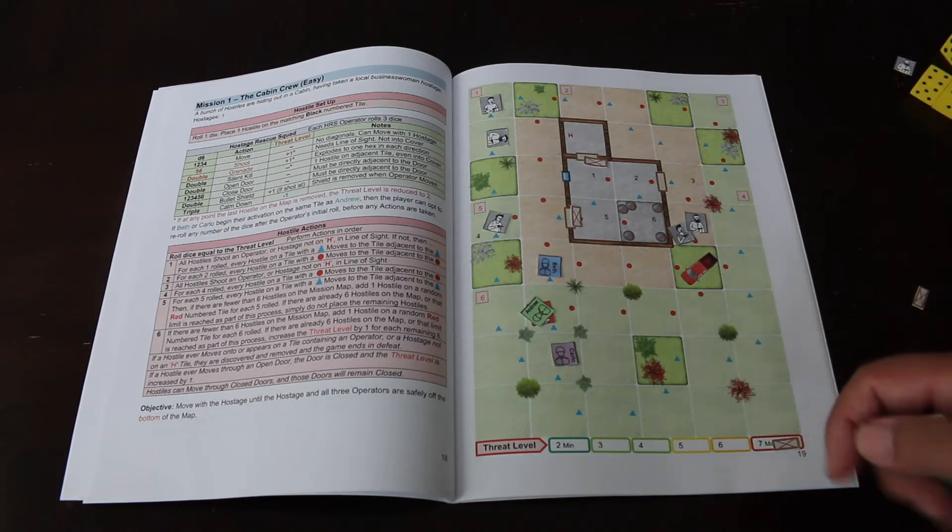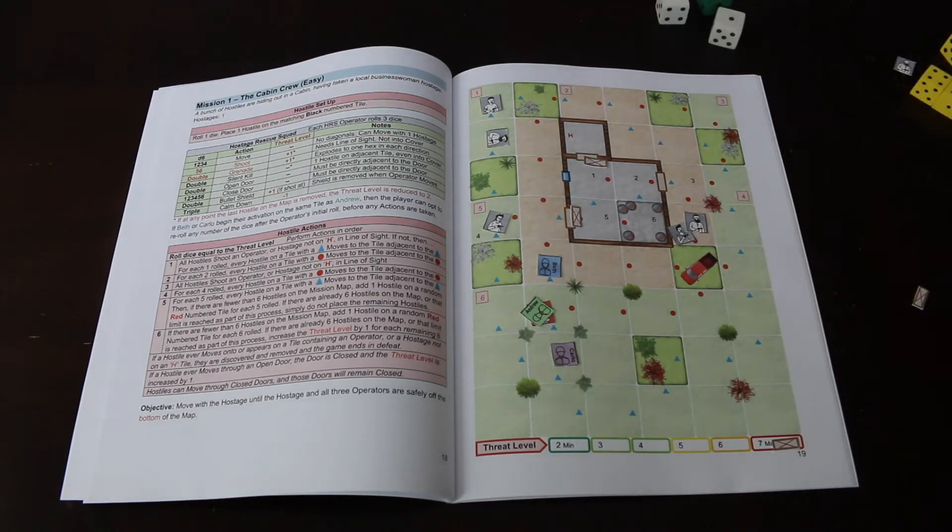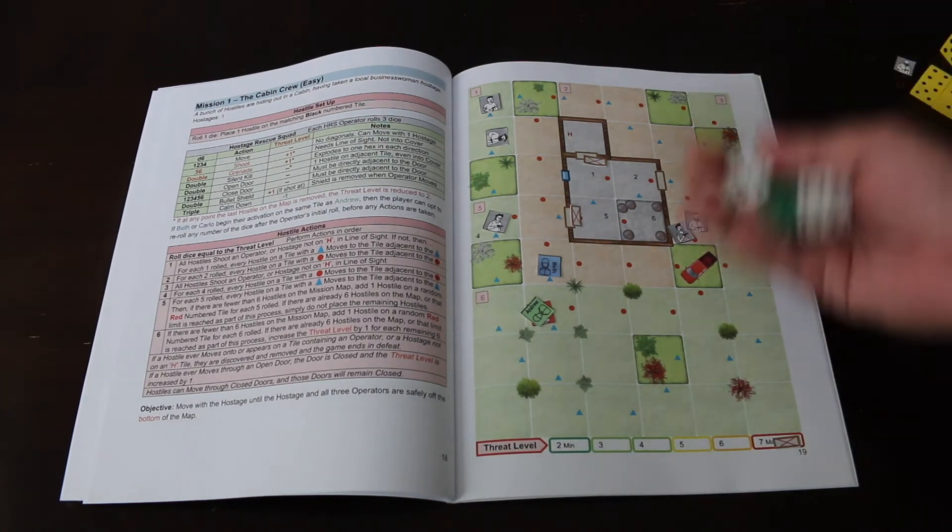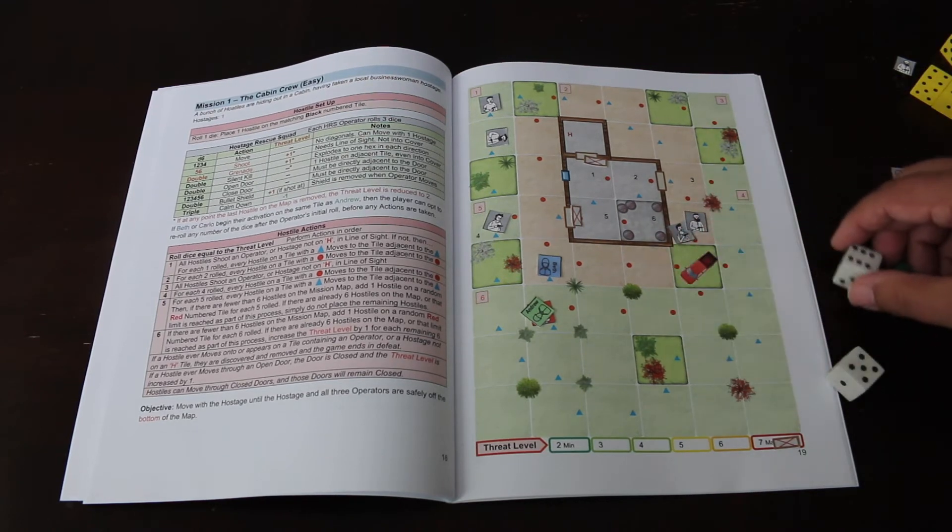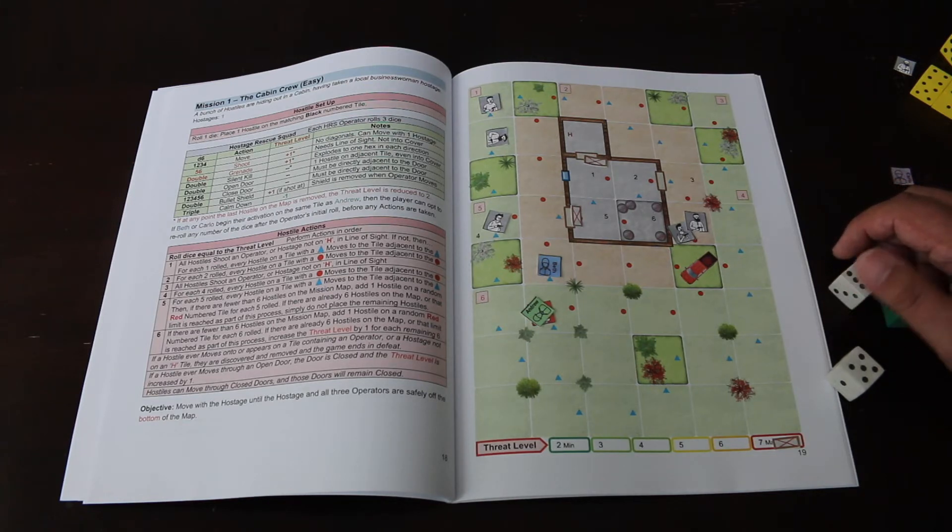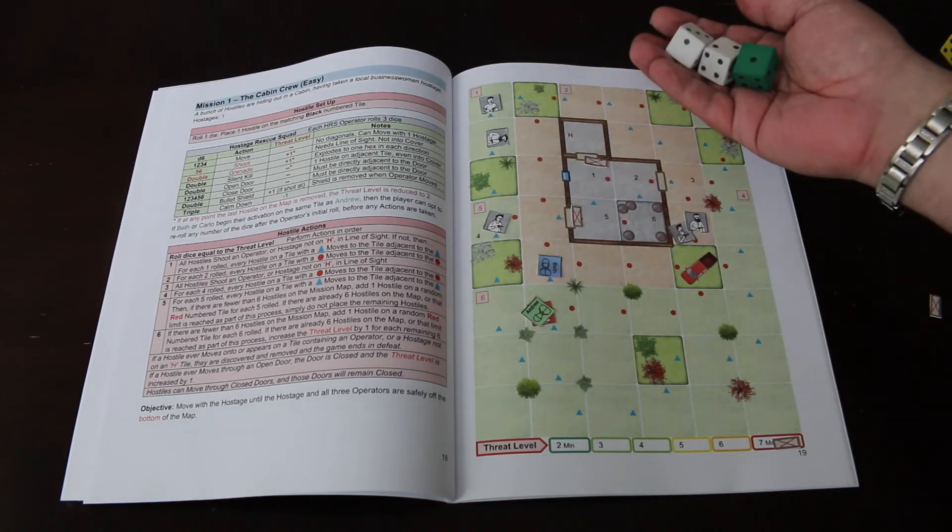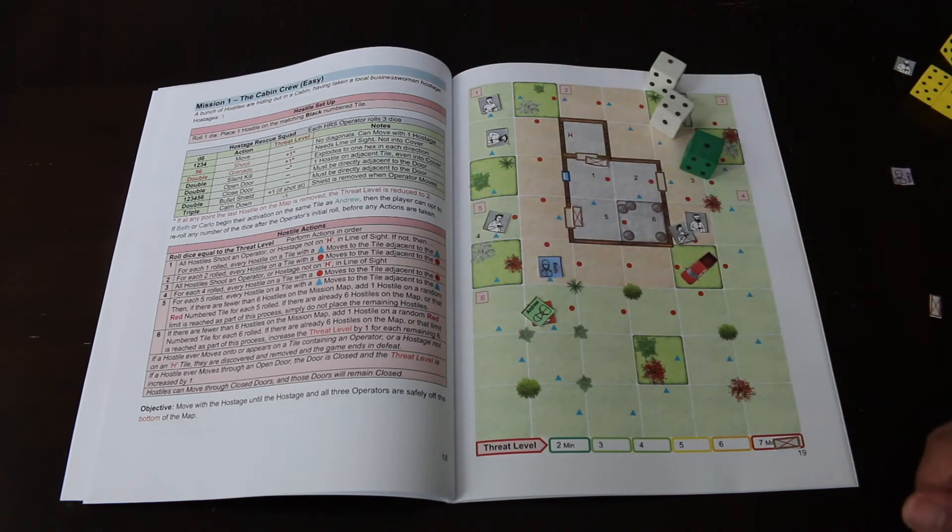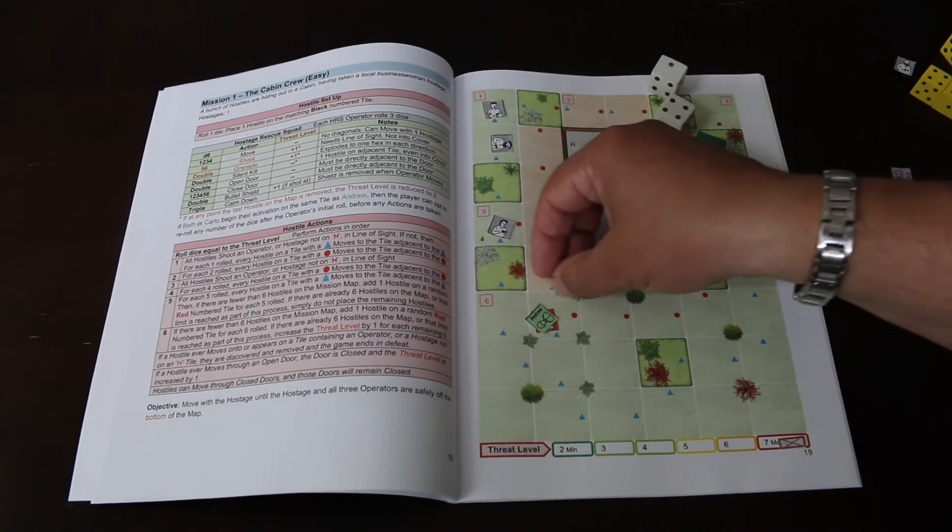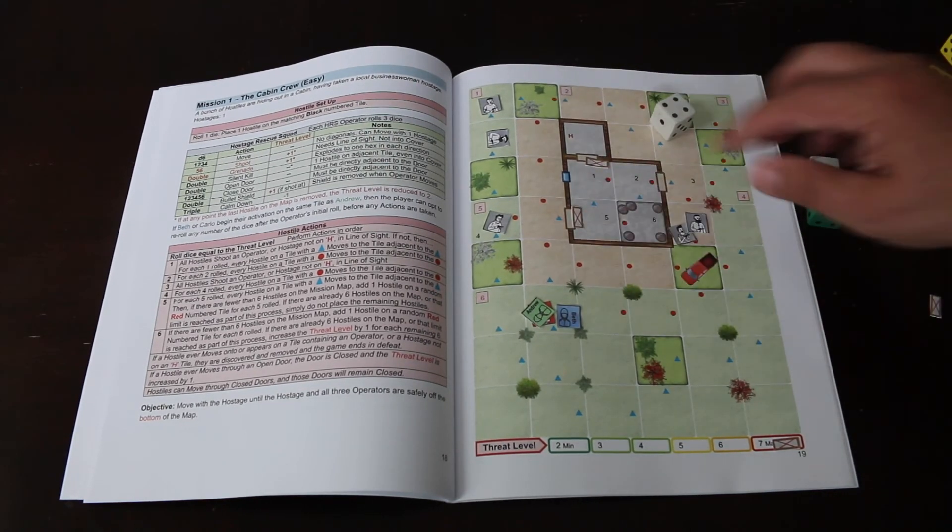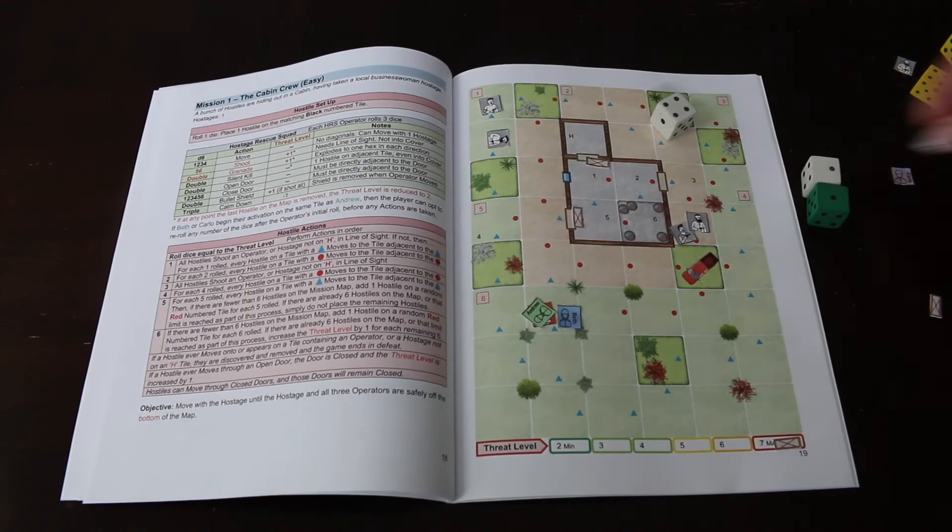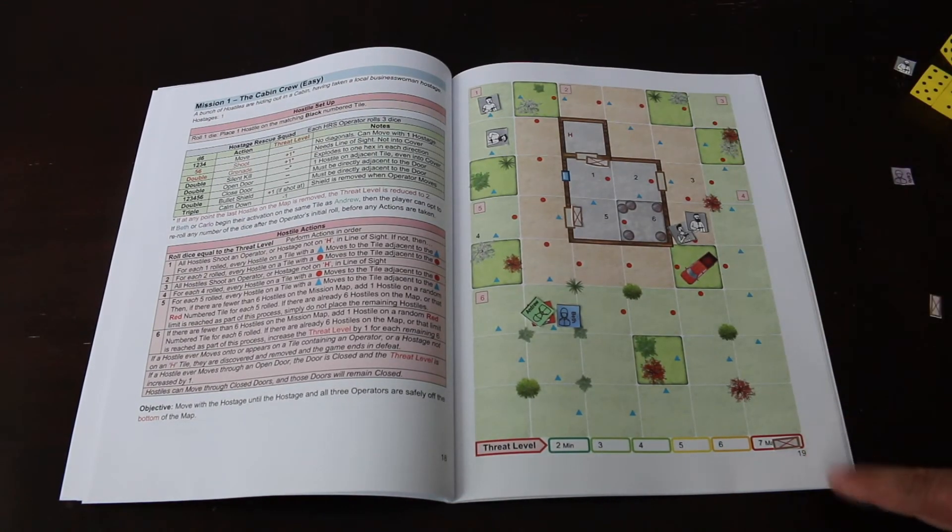Back to the good guys. Carlo is going to go first and gets off the map. Andrew and the hostage will go. That was a terrible roll - that doesn't do anything that will help him. That sucks. Now Beth is up. He's in a bad position there because if this guy moves and gets a chance to shoot, he's going to kill him. Beth will move one and then use her double one to throw a grenade right here, which kills this guy. That actually worked out. Threat level doesn't go up because it's already at the max of seven.